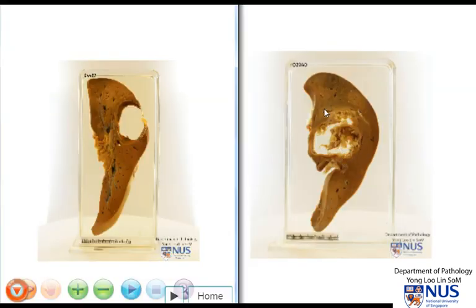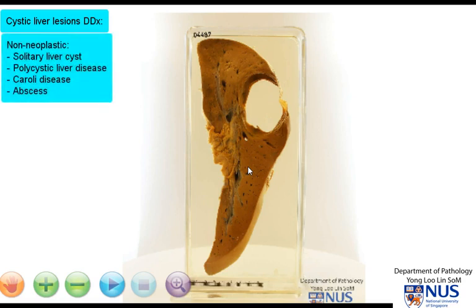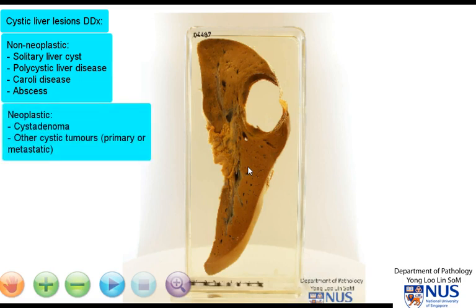We can contrast the amoebic abscess with the solitary unilocular cyst, and you can see that it looks extremely different grossly. To summarize, we are looking at a solitary or congenital liver cyst. The differential diagnosis for cystic lesions in the liver includes non-neoplastic conditions such as this solitary cyst, abscesses with cavitation, polycystic liver disease, and Caroli's disease — which is dilatation of the intrahepatic biliary system — as well as neoplastic conditions such as cystadenoma and other cystic tumors.